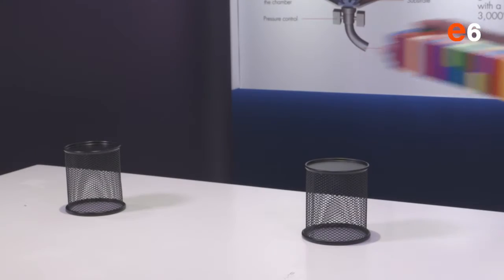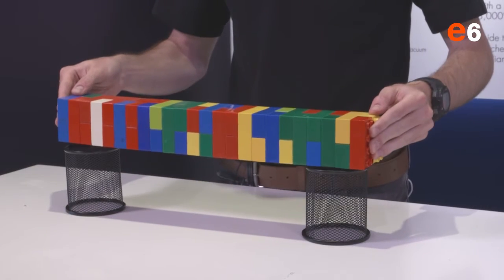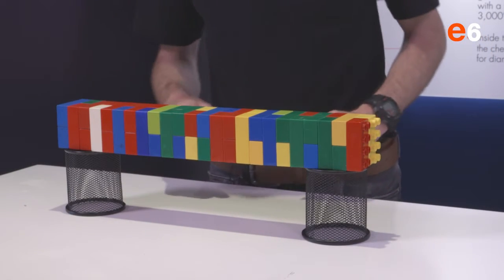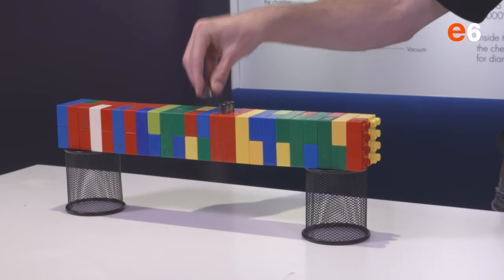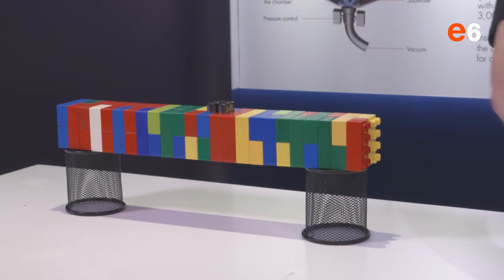Now if we interlink the blocks we can place a lot more weight on the blocks before it fails. This is similar to how things are built from atoms. If you connect atoms in different ways you can change the properties.